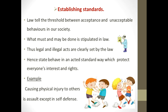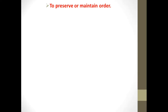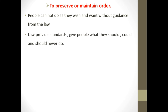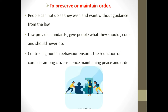Our second purpose of law is to preserve or maintain order. Imagine if everyone was allowed to do as they wish without considering other people or our environment — it would be hectic. Law provides standards to guide people on what they should do, what they may do, and what they must not do, thereby governing human behavior and actions in the state. By controlling human behavior, law ensures a reduction in conflict among citizens, whether at home, the workplace, or in the community, giving each person boundaries so that no one's actions affect or enslave another person, thus maintaining peace and order.